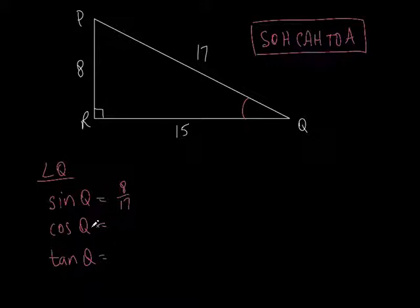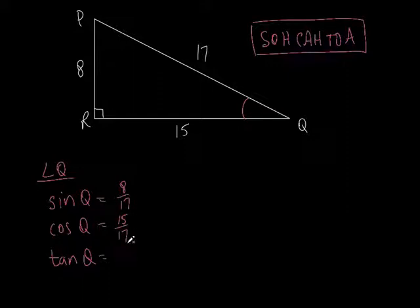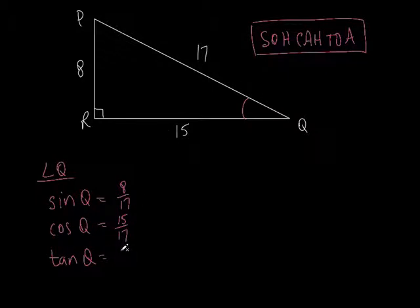Let's do the cosine of angle Q. Cosine is adjacent over hypotenuse. Which side is adjacent to angle Q? That would be 15. The hypotenuse is 17. So cosine of angle Q is 15 over 17. And the tangent of angle Q: tangent is opposite over adjacent — that's TOA. Opposite is 8, adjacent is 15, so the tangent of angle Q is 8 over 15.